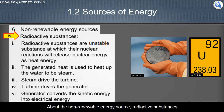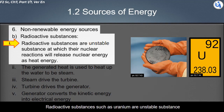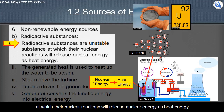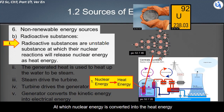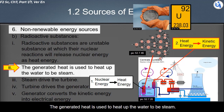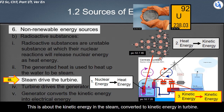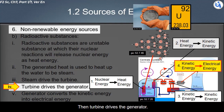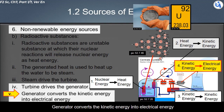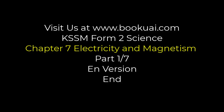The second non-renewable energy source is radioactive substances such as uranium, which are unstable substances whose nuclear reactions release nuclear energy as heat energy. The generated heat is used to heat water to produce steam — heat energy is converted into kinetic energy in water particles. The steam then drives the turbine, transferring kinetic energy from steam to turbine. The turbine drives a generator that converts the kinetic energy into electrical energy.